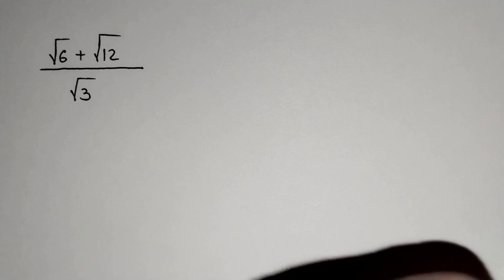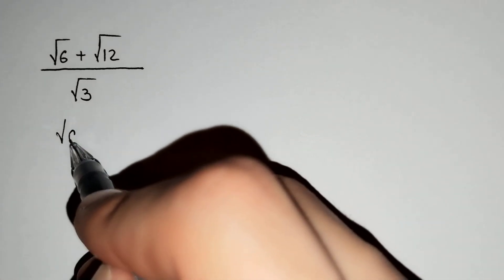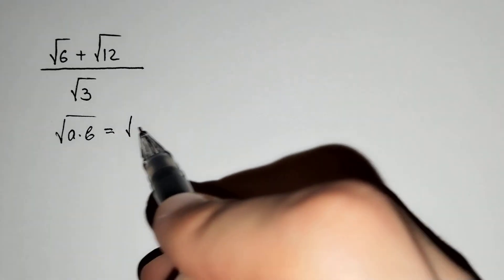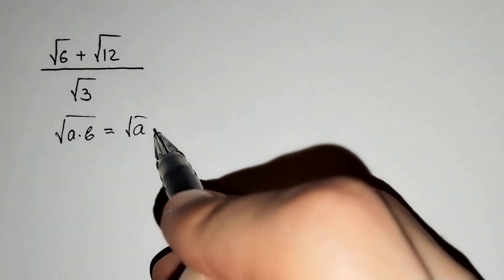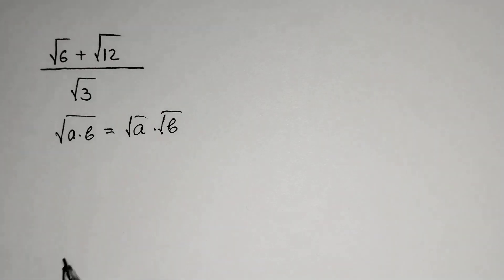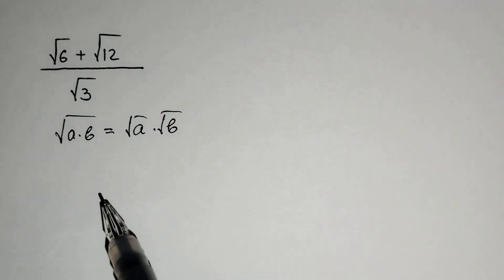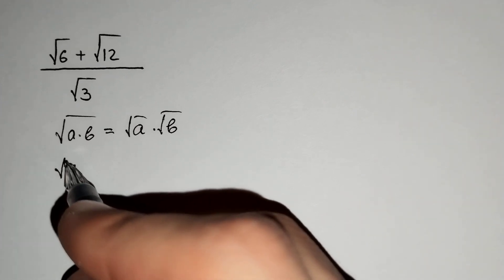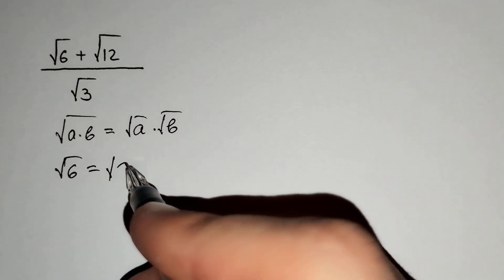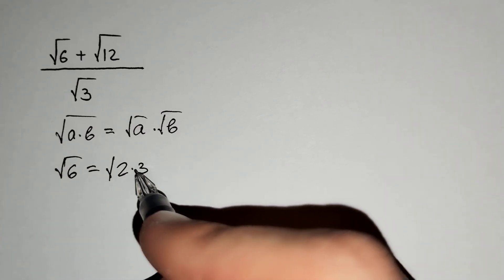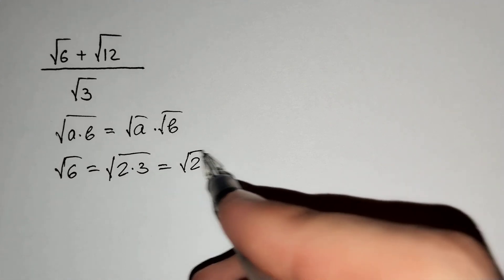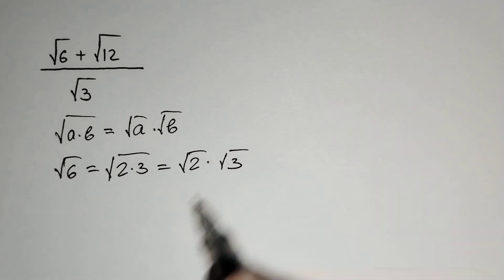Firstly, you should know that the square root of a times b equals the square root of a times the square root of b. And since 6 equals 2 times 3, the square root of 6 equals the square root of 2 times 3, which equals the square root of 2 times the square root of 3.